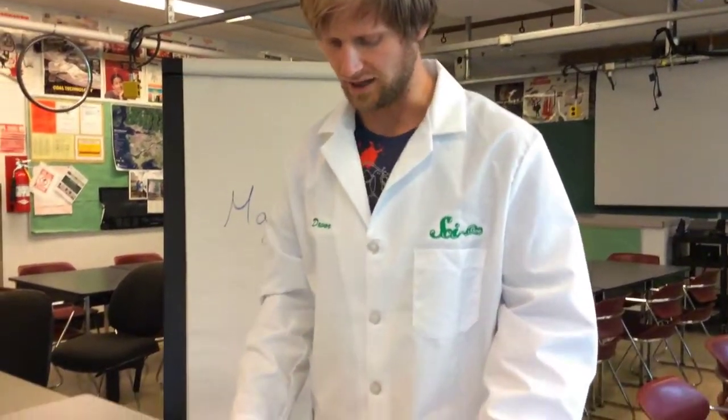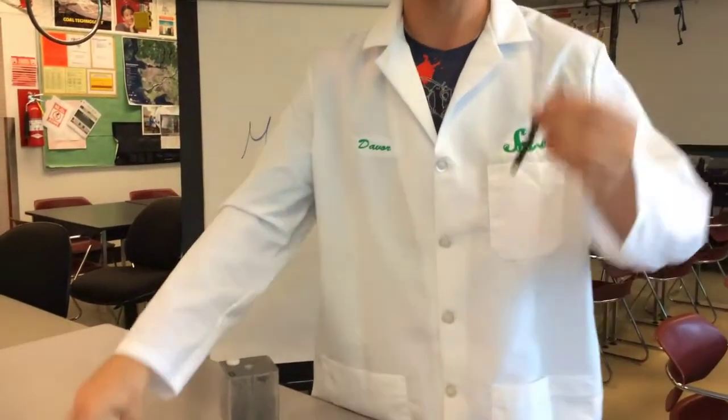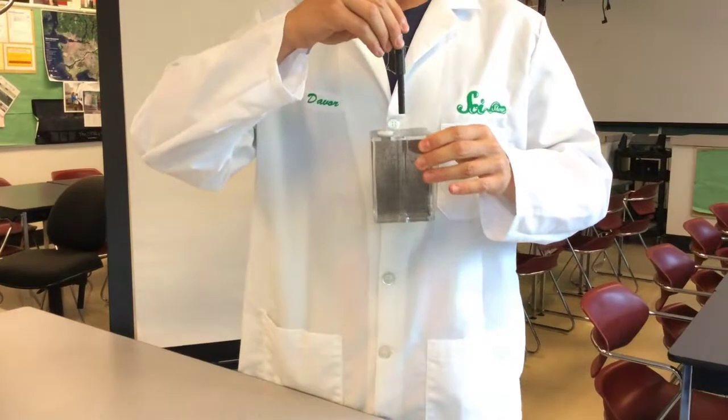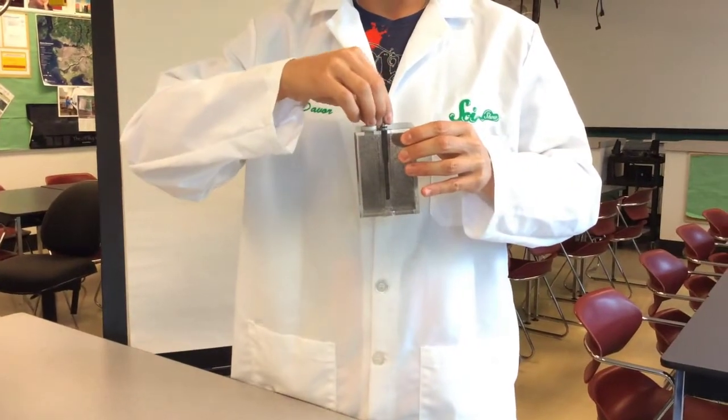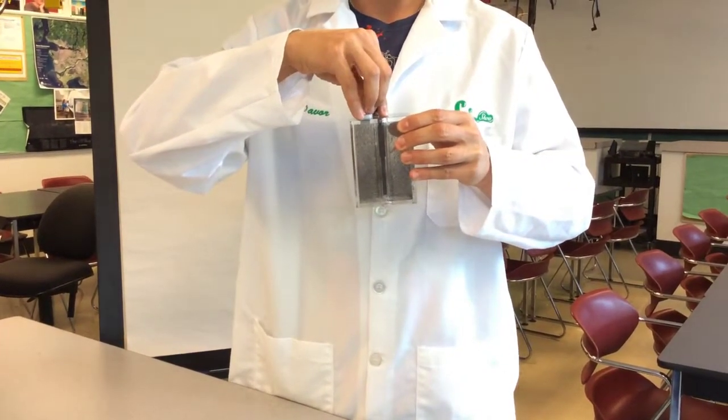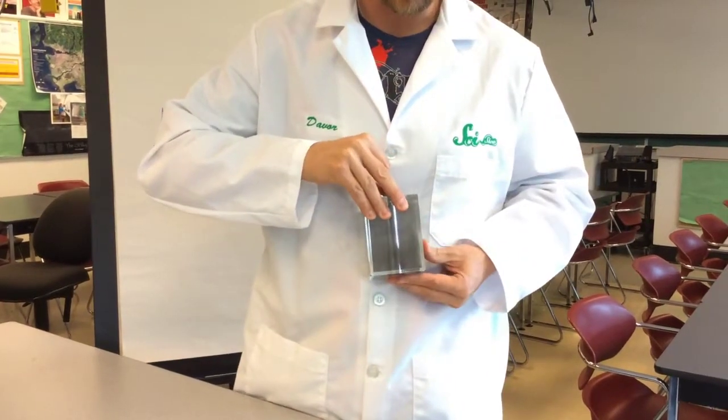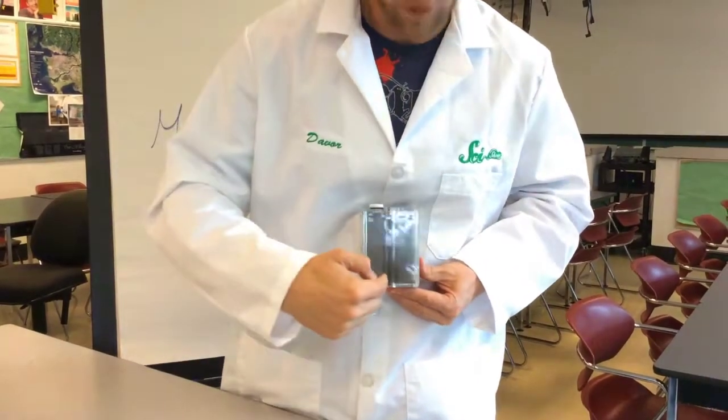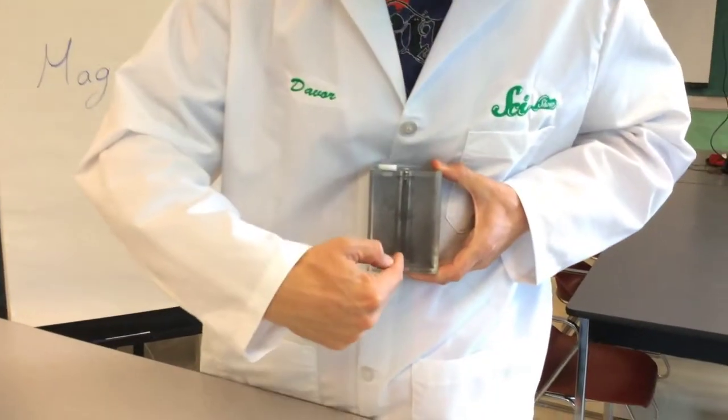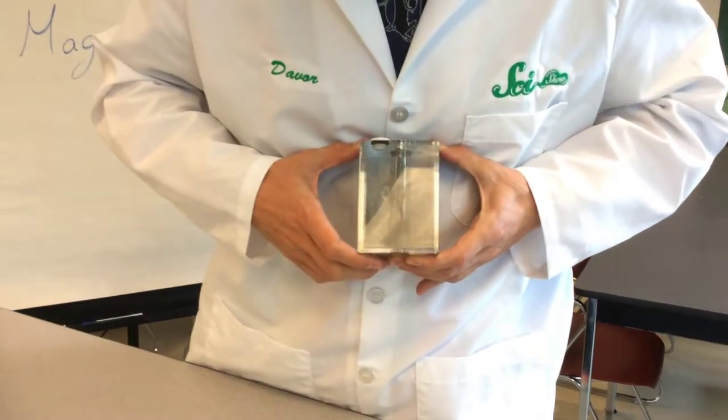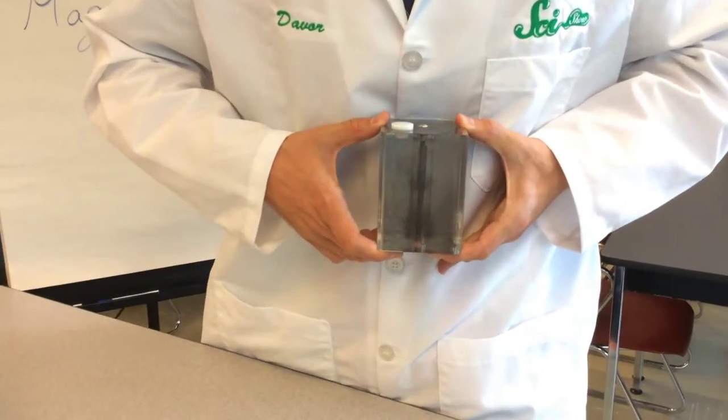Then what I do next is I take this magnet and I put it inside, and can you see how the iron filings are arranging themselves according to the magnetic field lines? You can see how they're running all the way around here. It's a much better way of visualizing the magnetic field.